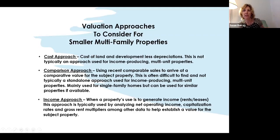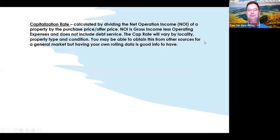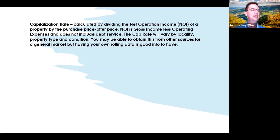The capitalization rate is calculated by dividing your net operating income of a property you're considering — or using as a comp — divided by the purchase price or offer price. The NOI is calculated by your gross income less your operating expenses. An important point to note: it does not include debt service.